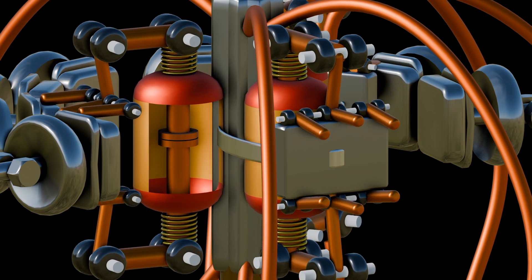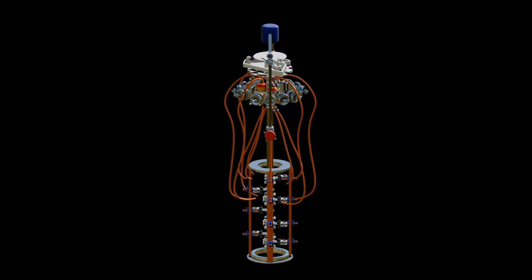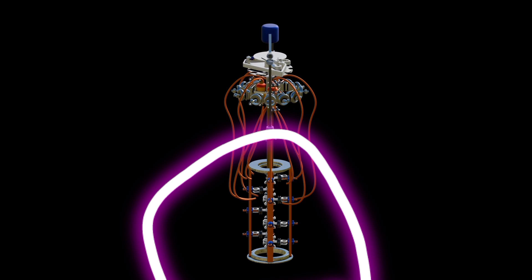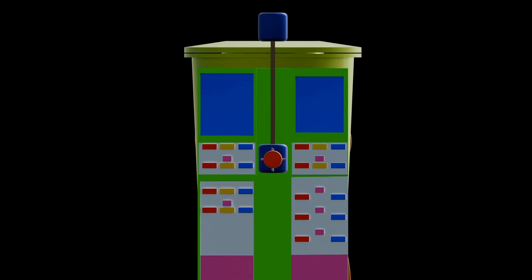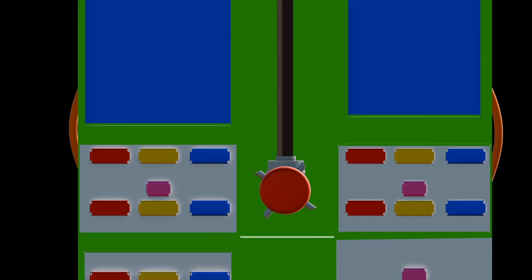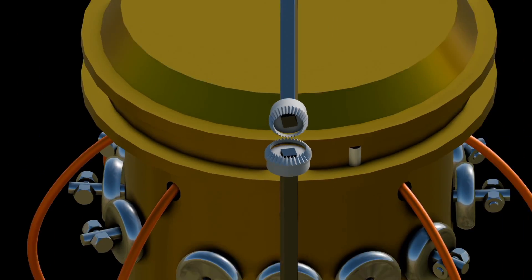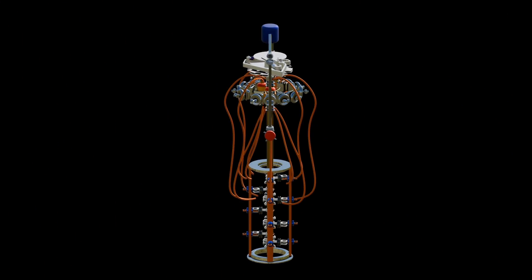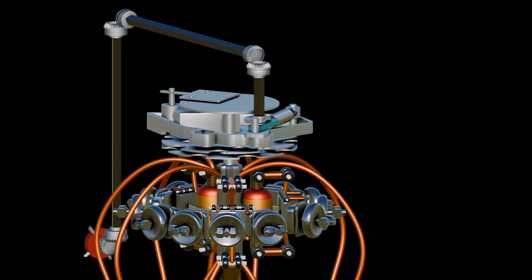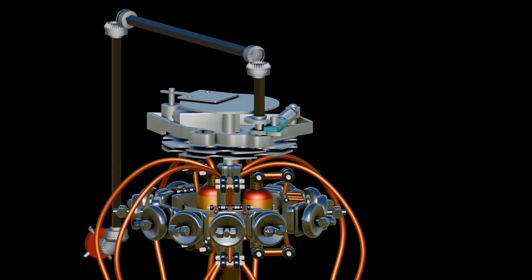Another component of OLTC is bypass switch. This switch allows the transformer to be bypassed during tap changing operations, ensuring uninterrupted power supply to the load. Also it has a control system, which coordinates the operation of the tap changer mechanism, selector switch, vacuum switch and bypass switch. It may also include sensors, relays and controllers to monitor and control the voltage and current levels.